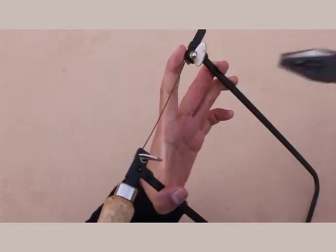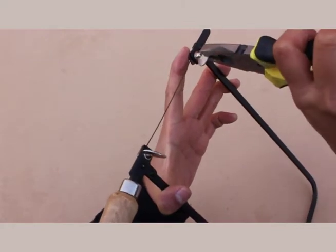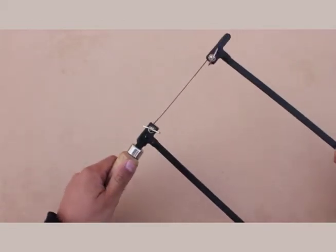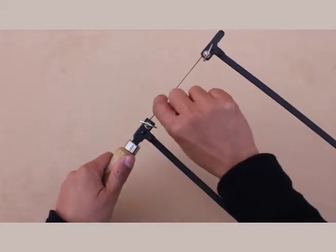Then further tighten the wing nut with a plier. Make sure that the blade is taut.